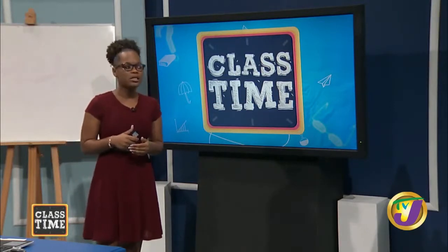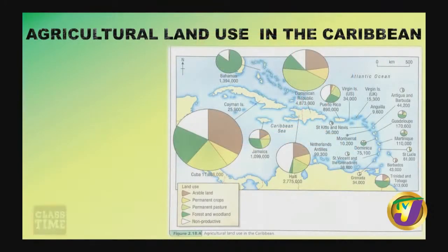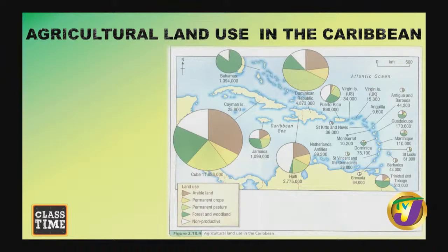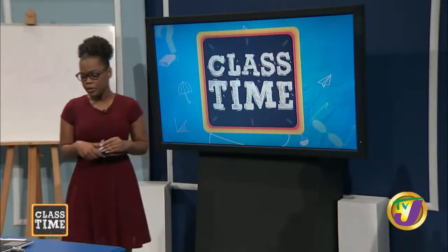Despite changes in numbers and contribution, agricultural activity in the Caribbean is still important as a reliable source of food, a reliable source of family income, and a viable means for foreign exchange. Looking at the agricultural land use map of the Caribbean, proportional circles represent the size of farmlands on each Caribbean island, with Cuba being the largest, indicating a high dependency on agricultural activity.